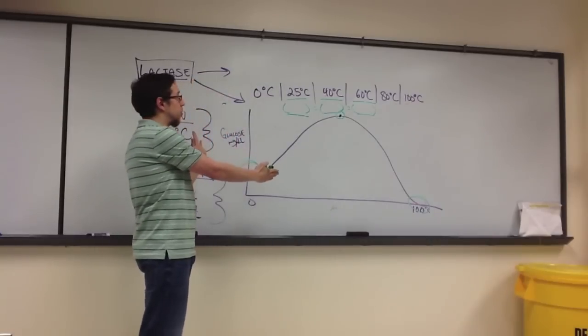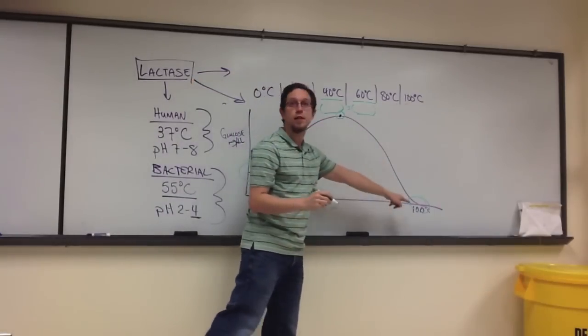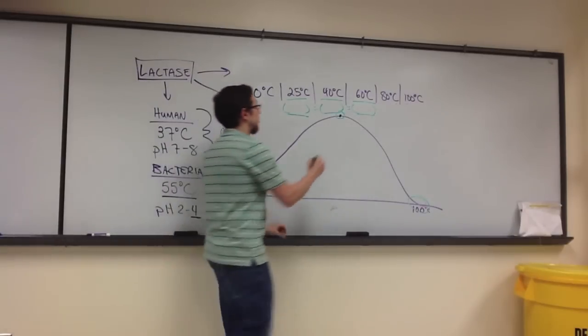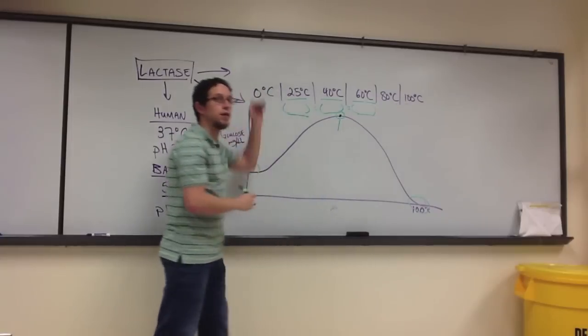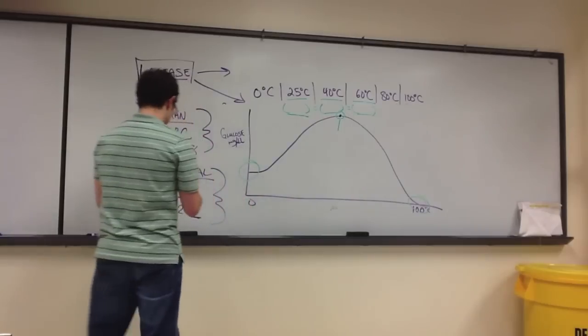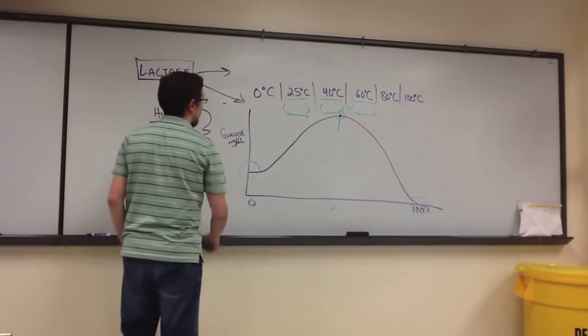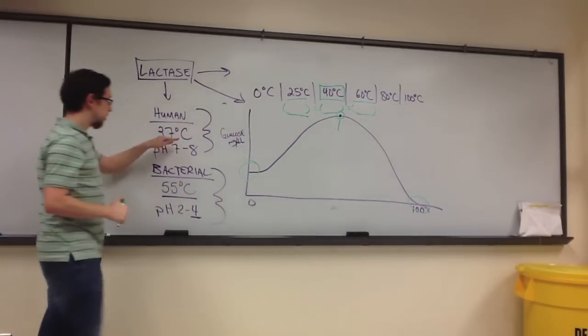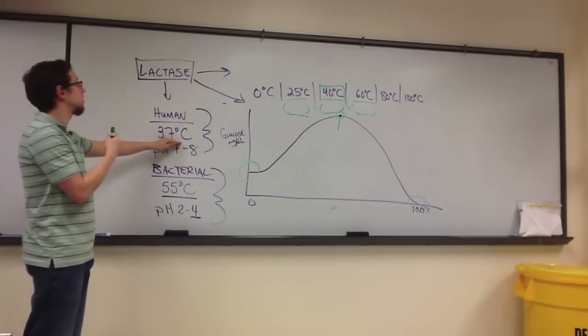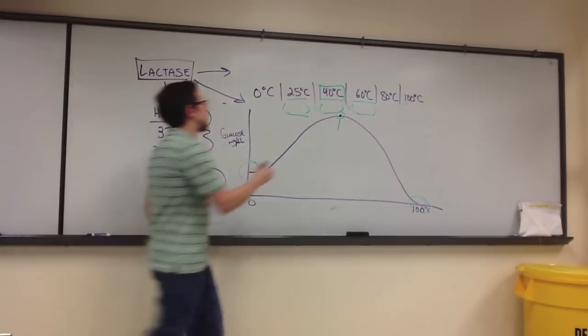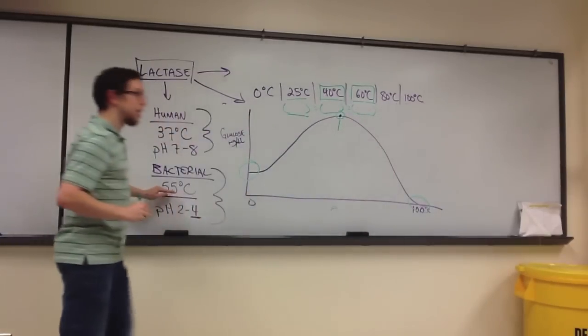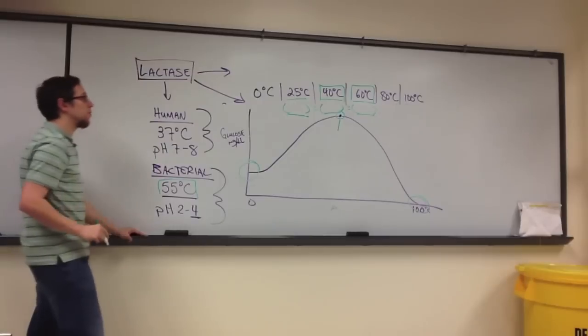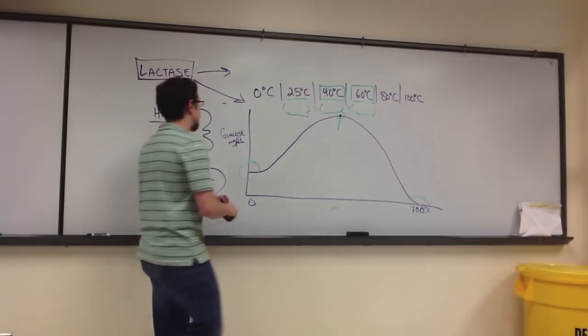The important thing to take away from this, though, is if you do have a curve that looks like this, you can then at least note that the optimal temperature is going to be the peak of that curve. Now if you do find, again, that 40 degrees is your optimal temperature, that lends some weight to the argument that this lactase was derived from humans. If you find that it's at 60 degrees, that lends to the argument that it might be from a particular type of bacteria capable of surviving at environments of that temperature.